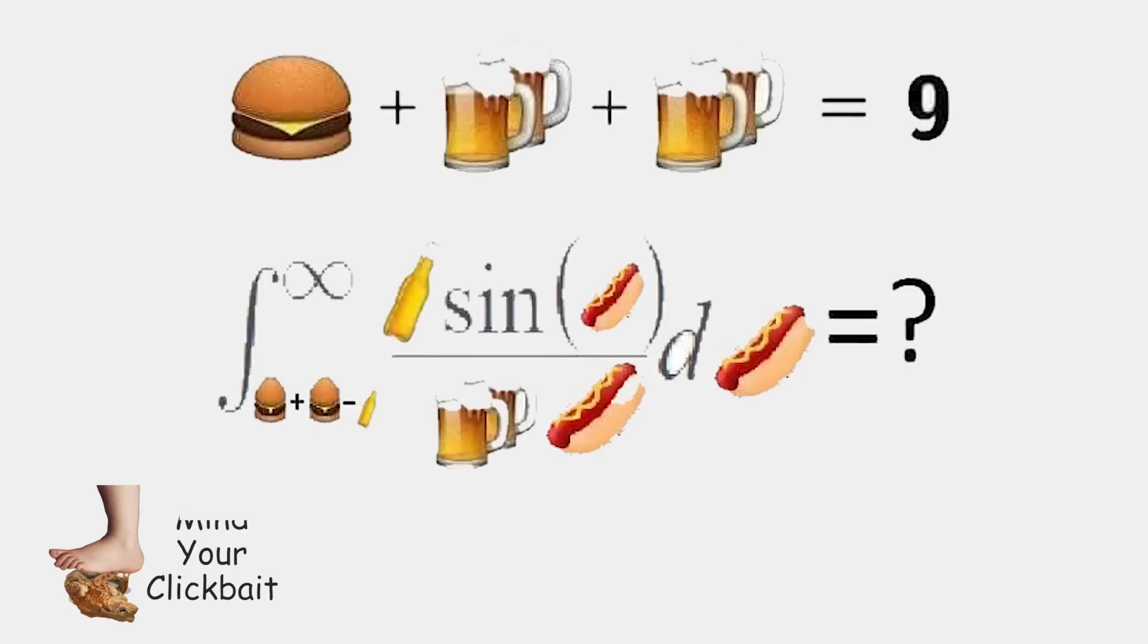We are almost done, my meme boys, with this thick equation right here. We just have to take a look at the last one. So we have 1 hamburger being at a value of 5, plus 4 times beer. Not really 4 times beer, it's 2 times 2 beers being equal to 9.